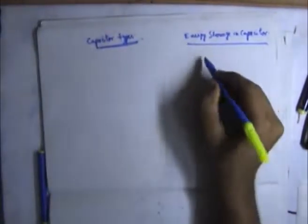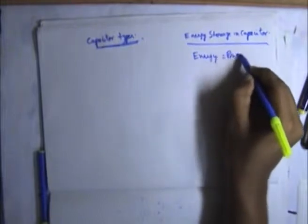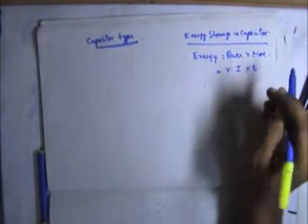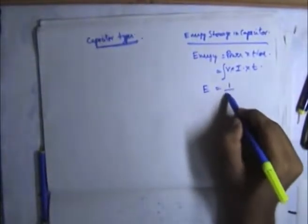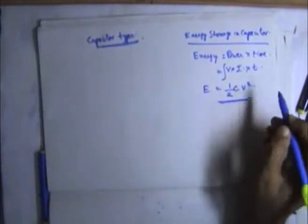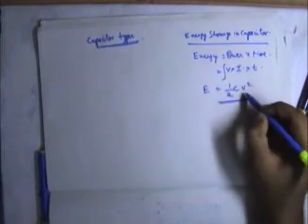I forgot to derive one concept — the energy storage in a capacitor. What is the energy stored in a capacitor? We know that energy equals power times time, and power equals V times I. When you integrate this with respect to time, we get the energy in a capacitor equal to one-half times C times V squared. This is the potential energy because the capacitor stores potential energy.